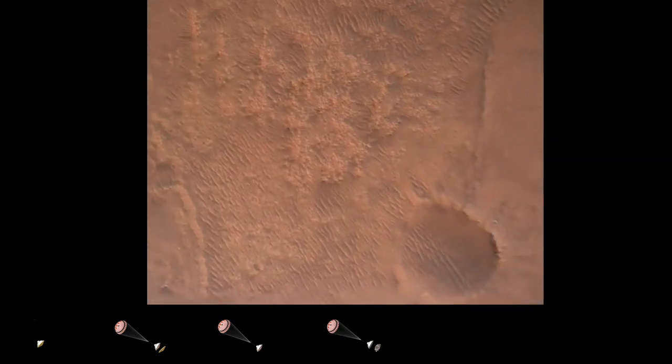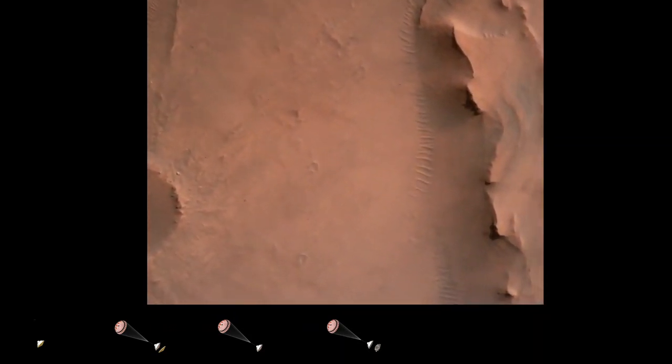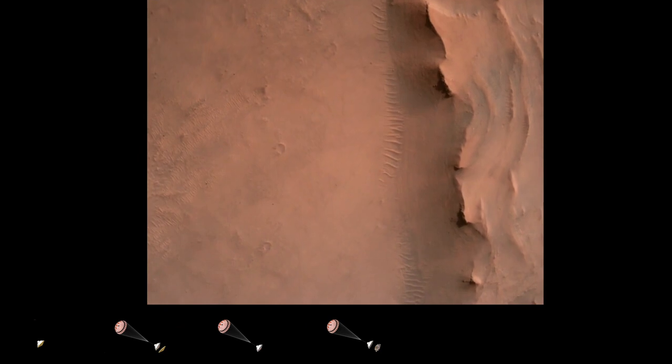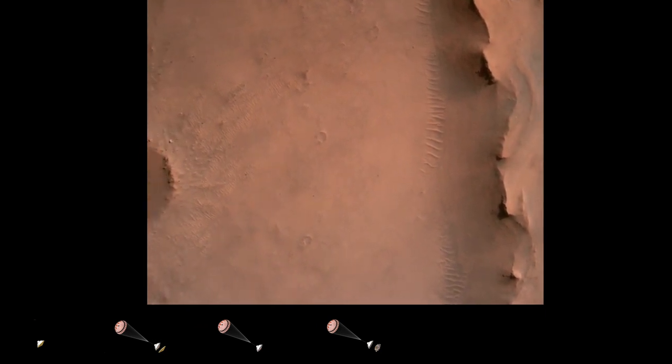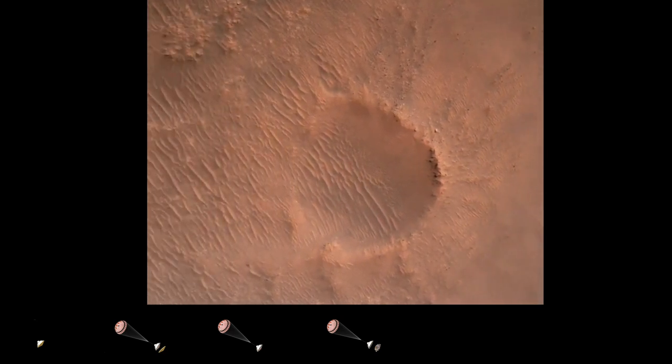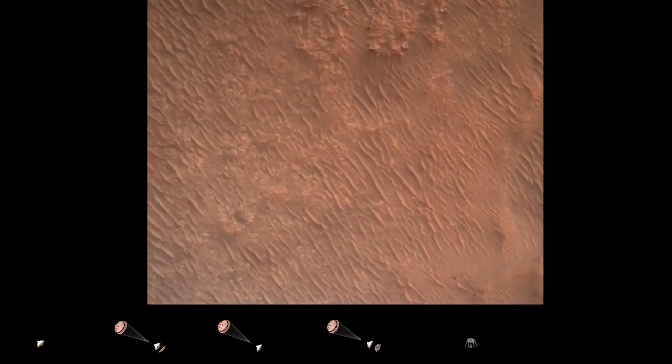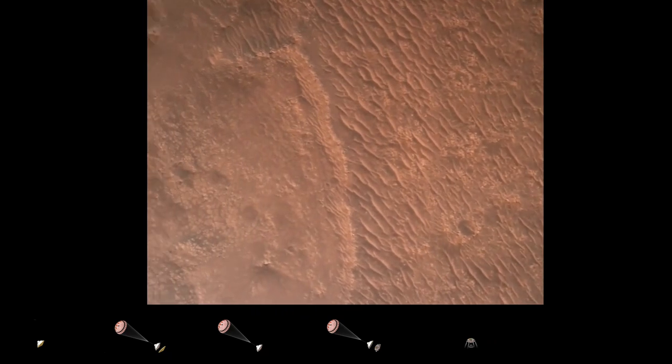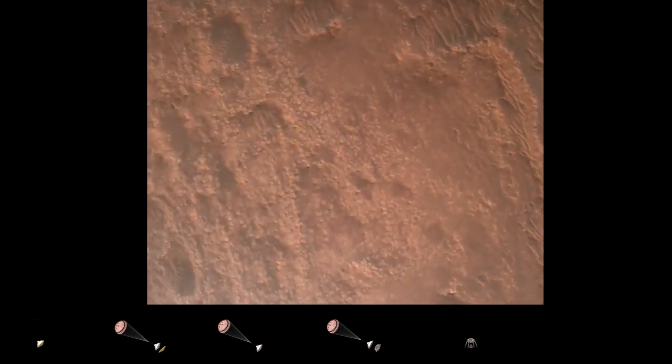Backshell separated. Current velocity is 83 meters per second at about 2.6 kilometers from the surface of Mars. We are currently performing the divert maneuver. Current velocity is about 75 meters per second at an altitude of about a kilometer off the surface of Mars.